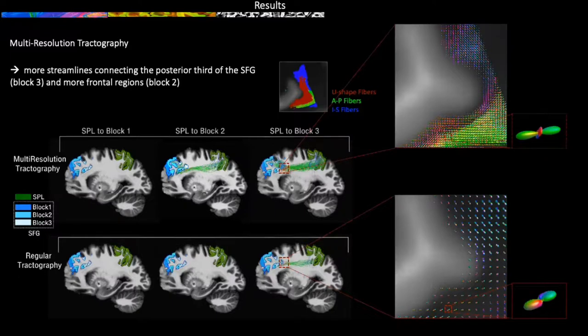we can clearly see how the high-resolution data allows us to distinguish between different fiber populations compared to the low-resolution data where they get blended together.